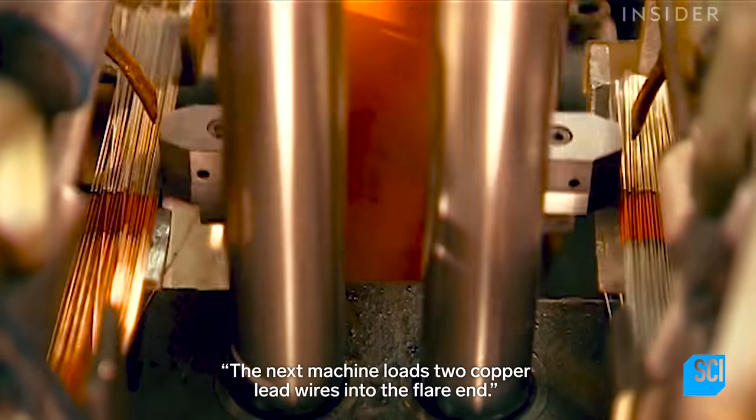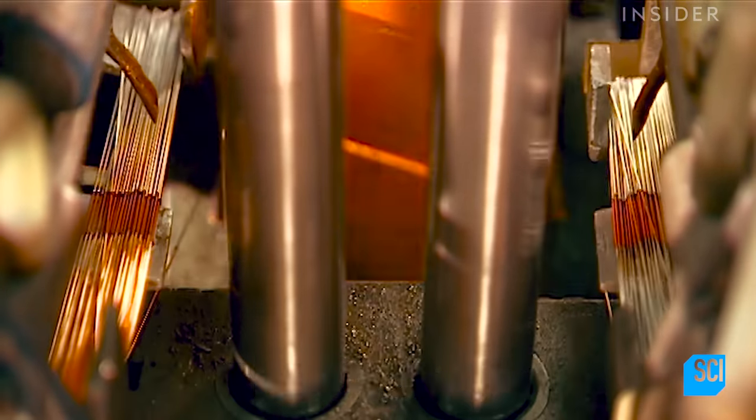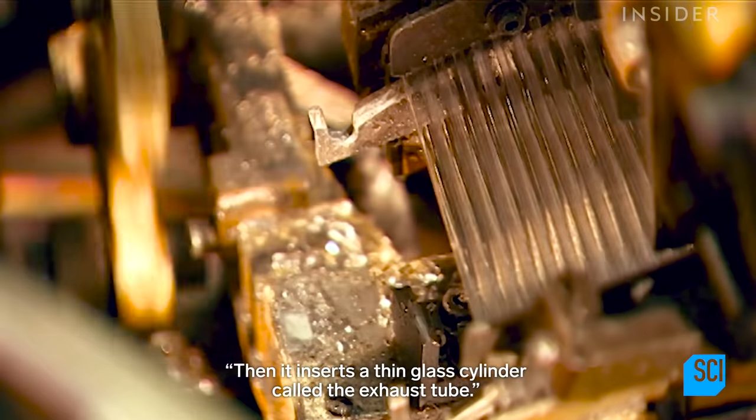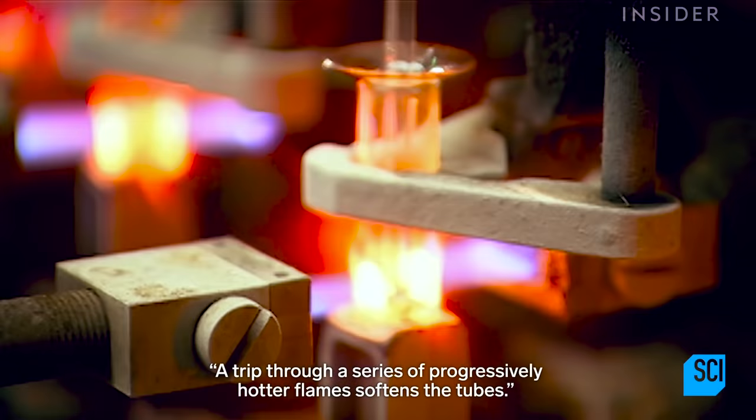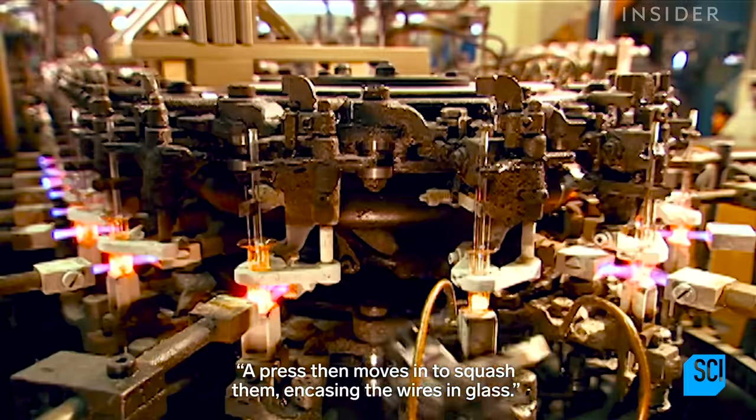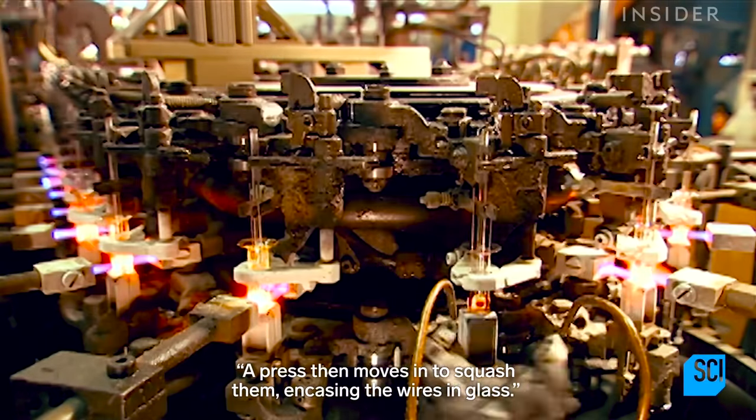The next machine loads two copper lead wires into the flare end. Then it inserts a thin glass cylinder called the exhaust tube. A trip through a series of progressively hotter flames softens the tubes. A press then moves in to squash them, encasing the wires in glass.